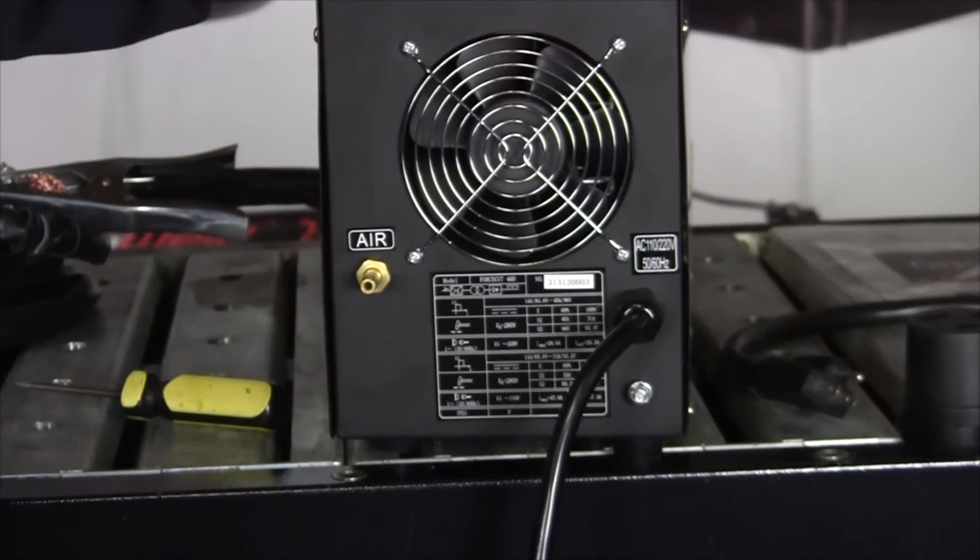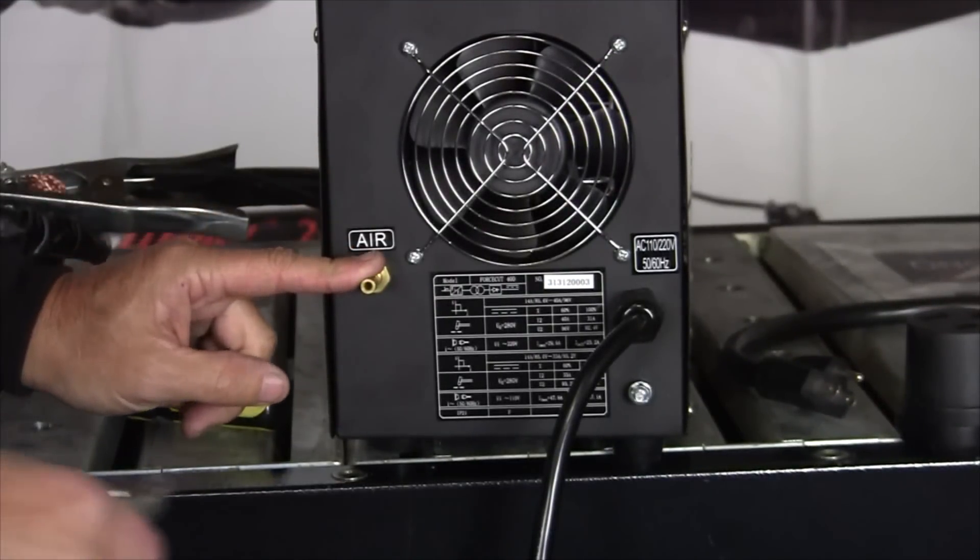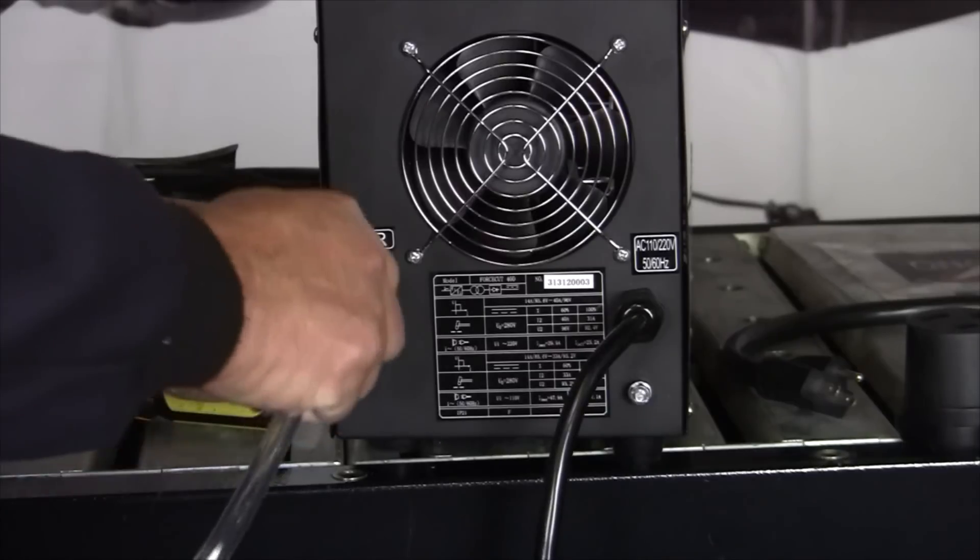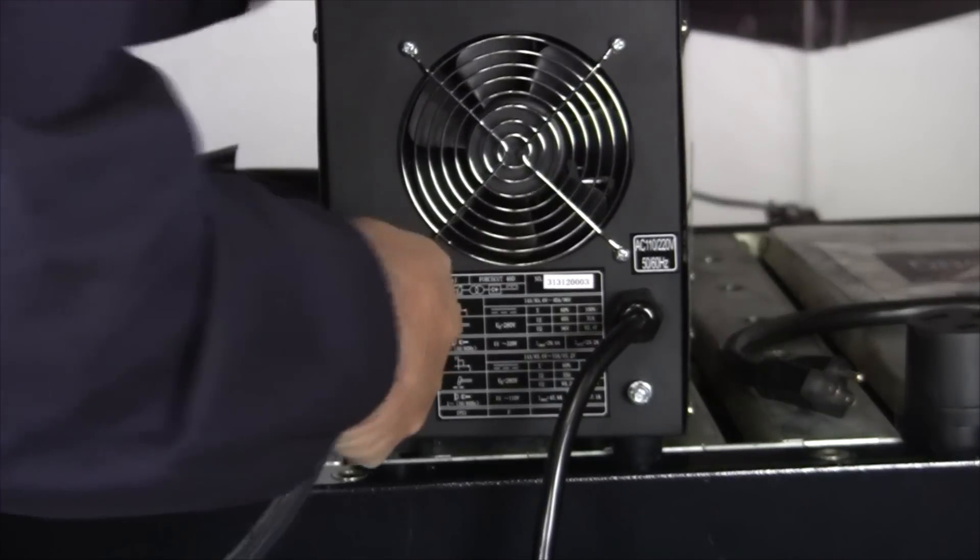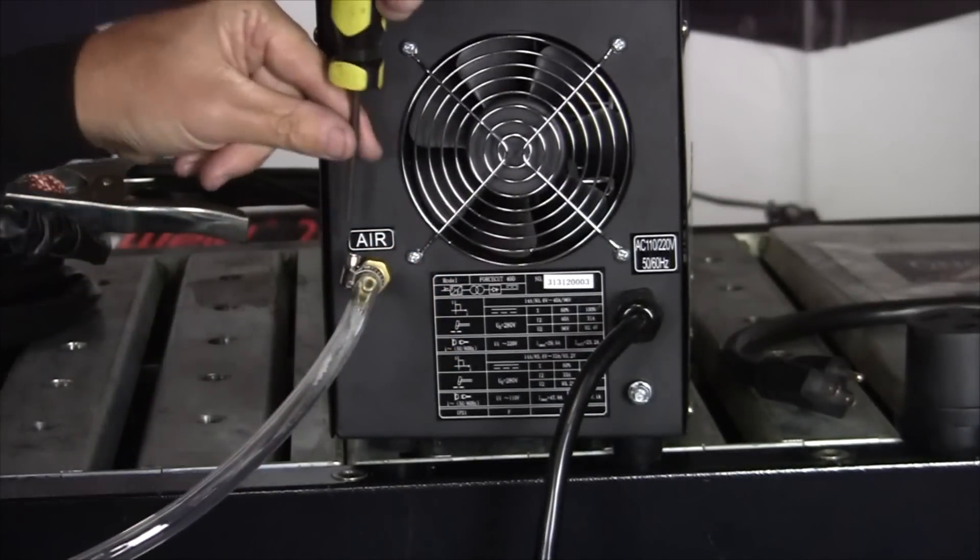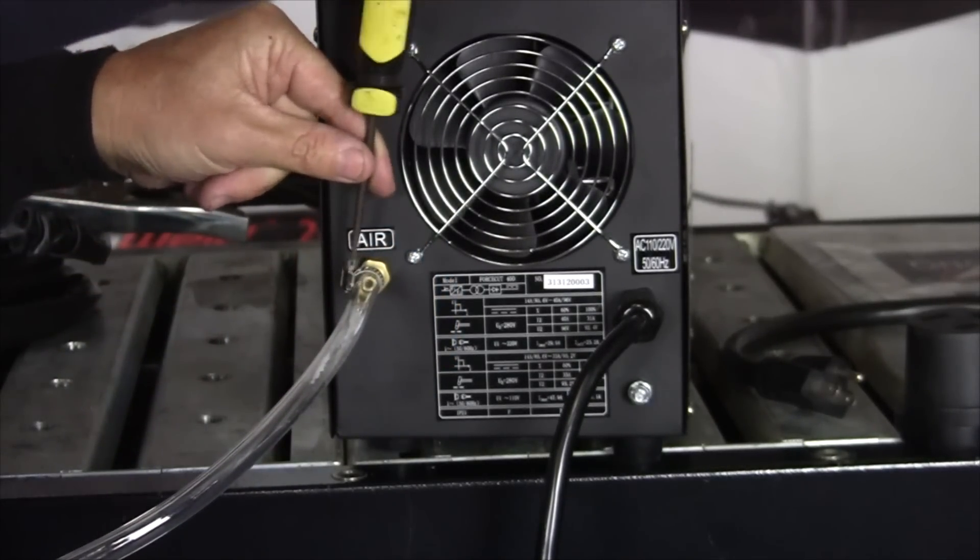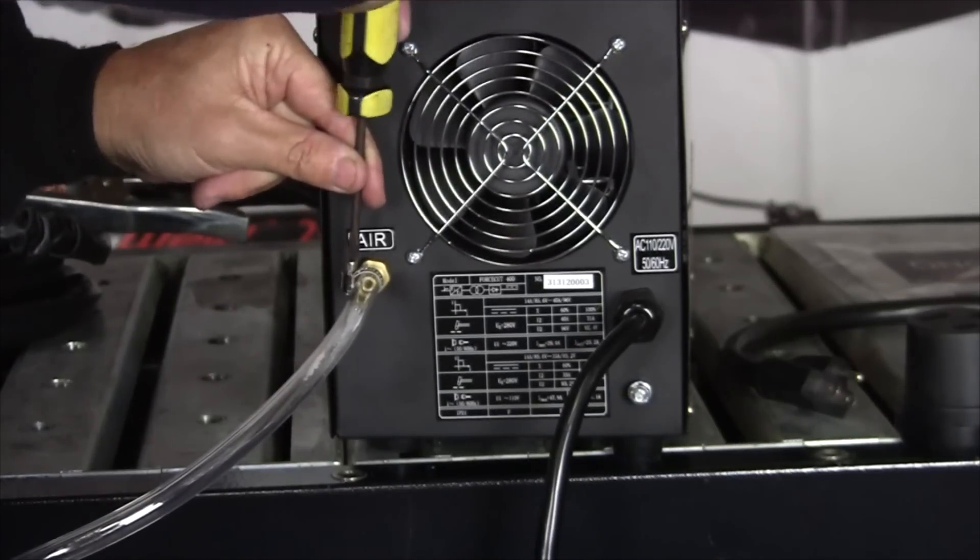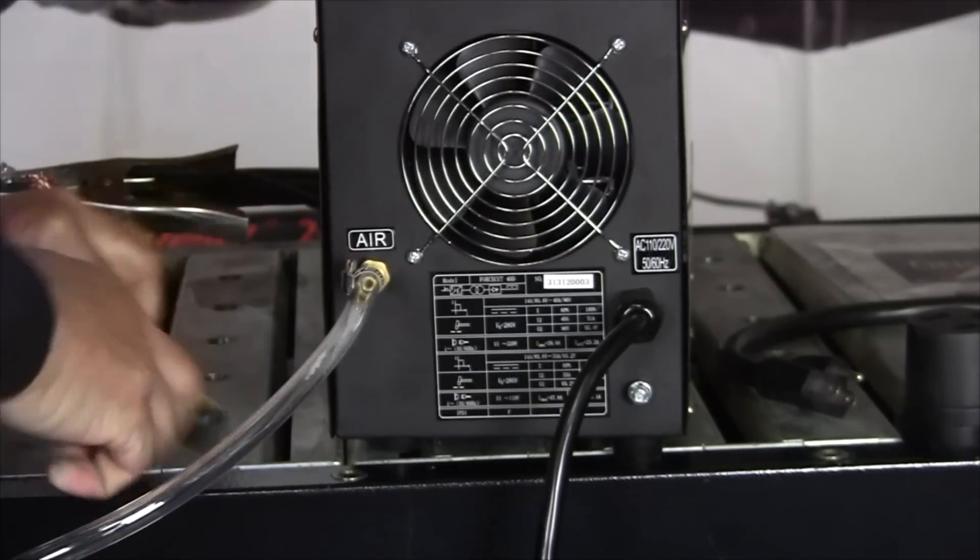I've turned the machine around. This is the back. Here's our air hose connection. Here's our air hose that came with the package and one of our hose clamps. Slide it on, tighten the hose clamp down. That's good.